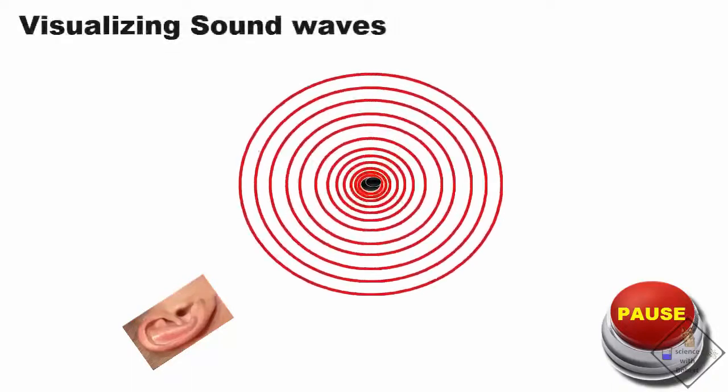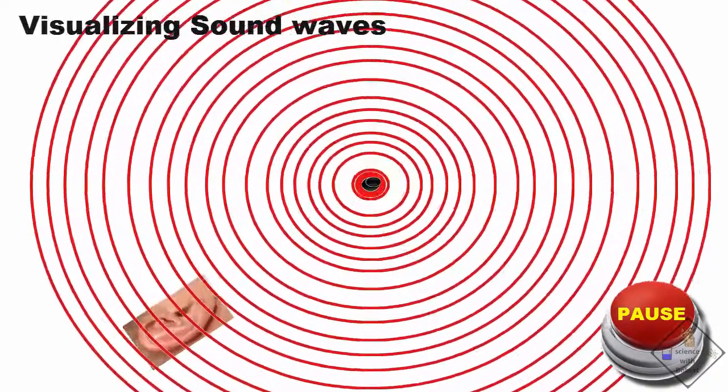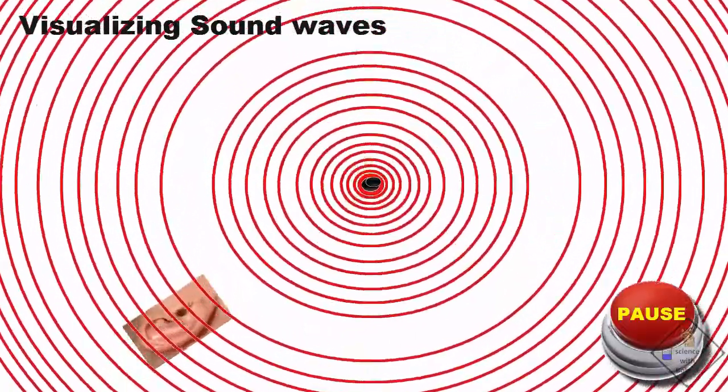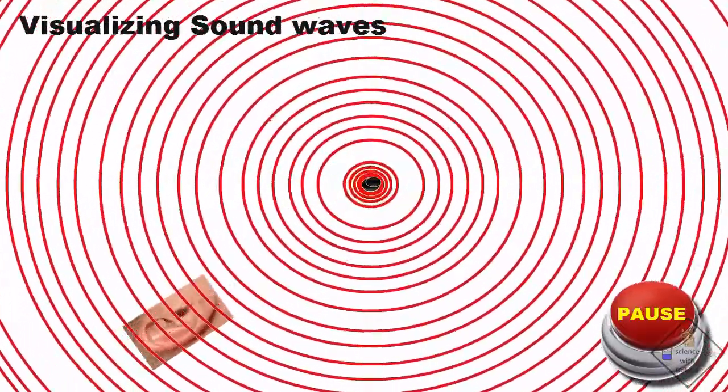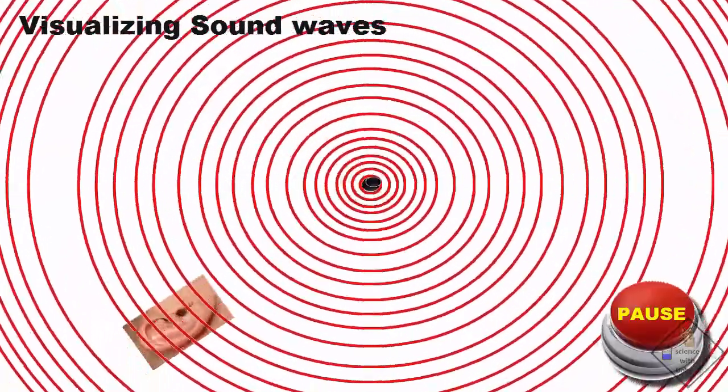To help us understand the Doppler effect, we need to visualize sound. In this animation, each red line coming from the black dot is actually 1,000 sound waves.